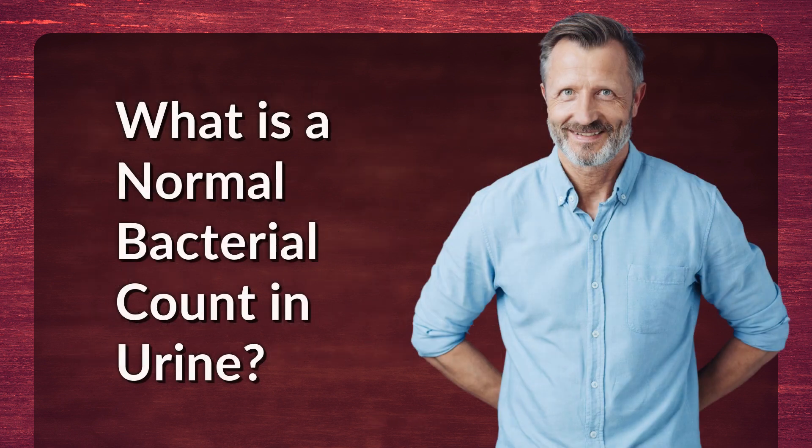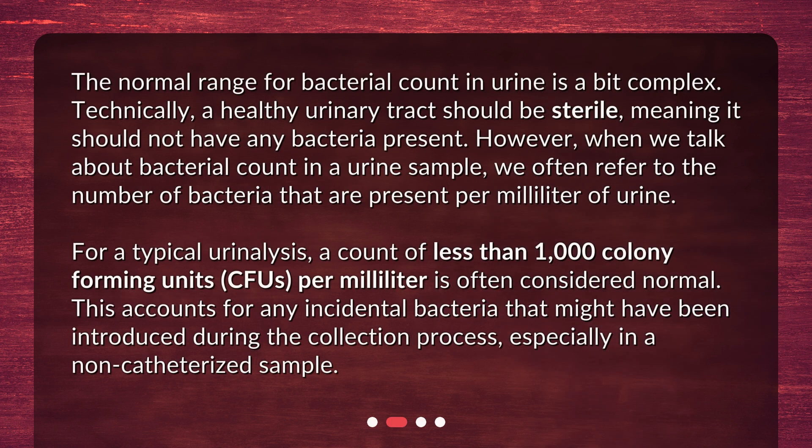What is a normal bacterial count in urine? The normal range for bacterial count in urine is a bit complex. Technically, a healthy urinary tract should be sterile, meaning it should not have any bacteria present. However, when we talk about bacterial count in a urine sample, we often refer to the number of bacteria present per milliliter of urine. For a typical urinalysis, a count of less than 1,000 colony-forming units per milliliter is often considered normal. This accounts for any incidental bacteria that might have been introduced during the collection process, especially in a non-catheterized sample.